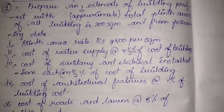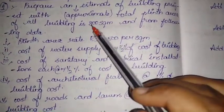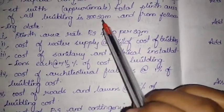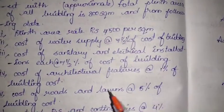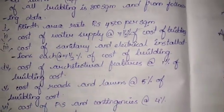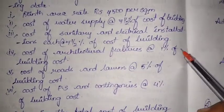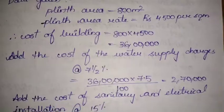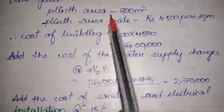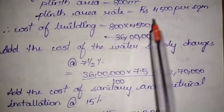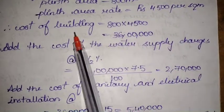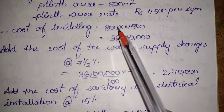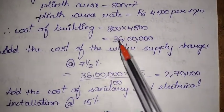Now for the solution: we are given the plinth area of 800 square meters and the plinth area rate of 4500 per square meter. The total cost of building is simply the rate per square meter multiplied by the total area, and that gives us the cost of the building.